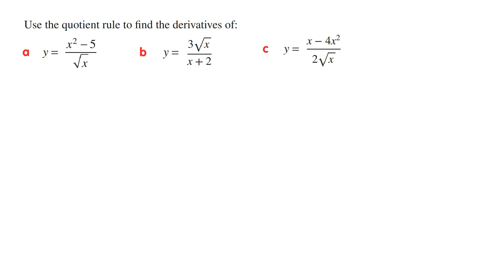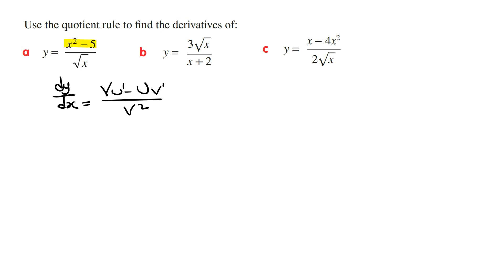Whenever you need to use the quotient rule to derive a function, it's best to start with the quotient rule formula. And that is dy/dx is equal to v·u dash minus u·v dash over v squared. We're going to let u equal the top function and v equal the bottom function.